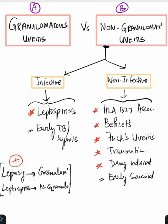Also note that early TB, syphilis, or early sarcoidosis can start out as non-granulomatous and then transform into granulomatous uveitis.